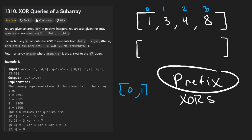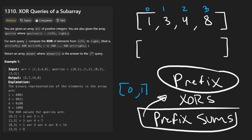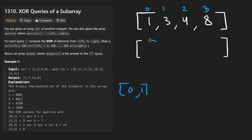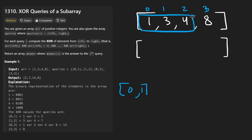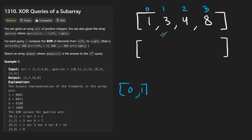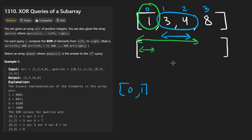If you agree with those XOR properties, you'll agree with the approach: prefix XORs. If you've never heard of this, at minimum look up prefix sums — prefix XORs are a step above that. With prefix XORs, we compute the prefix XOR for the input array. Each element stores the XOR of all values up to that point. To answer a query in constant time, we use those precomputed values.